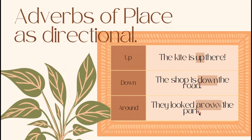Here are examples of adverbs of place as directional. We have 'up,' 'down,' and 'around.' For 'up': the kite is up there. For 'down': the shop is down the road. For 'around': they looked around the park. As stated earlier, an adverb of place is normally placed after a sentence object or main verb. Our main object in 'the kite is up there' is the kite.